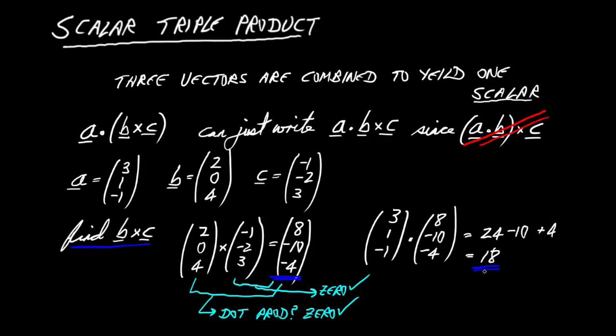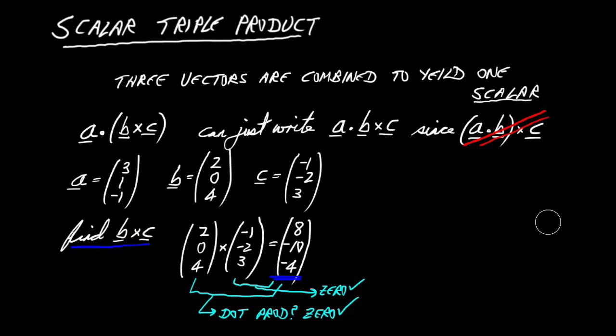To finish the scalar triple product, dot A with the cross product (8, -10, -4): A · (B × C) = 3×8 + 1×(-10) + (-1)×(-4) = 24 - 10 + 4 = 18. That's the answer — the scalar triple product equals 18 in this case. It could have been positive, negative, or zero.